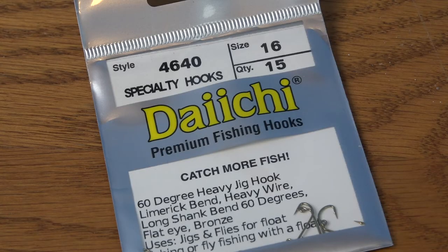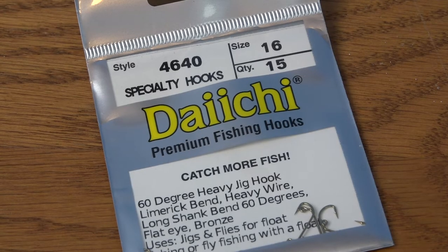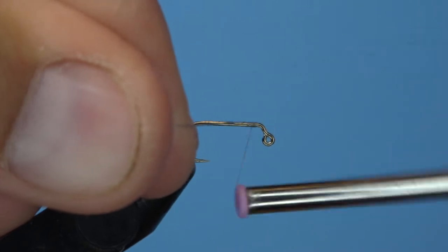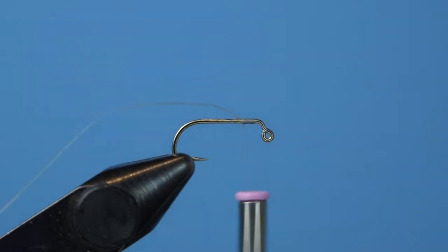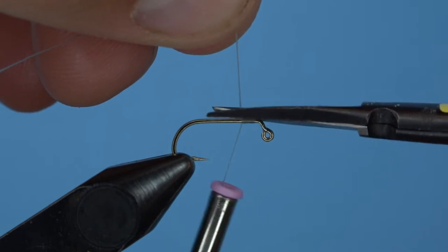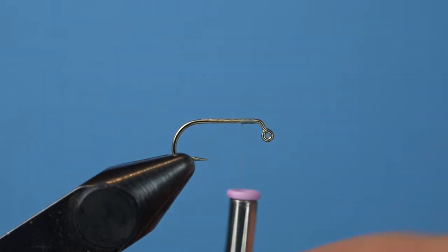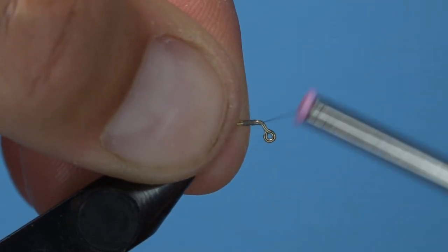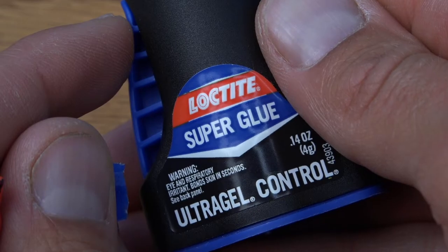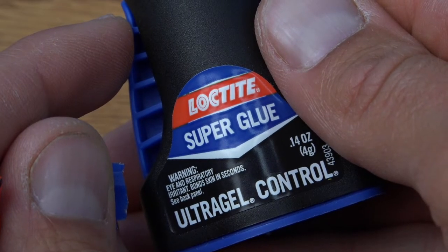The preferred hook for the Silver Fox is a Daiichi 4640, size 16. Other jig style hooks and accompanying slotted beads will work just fine. Get a base of 70 Denier Ultra Thread in blue done, started at the front of the hook, and leave it just off that 60 degree bend behind the eye.